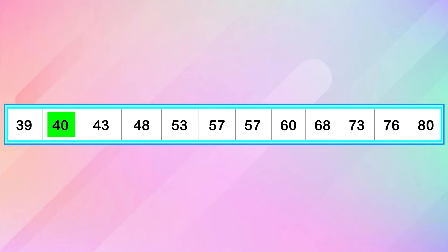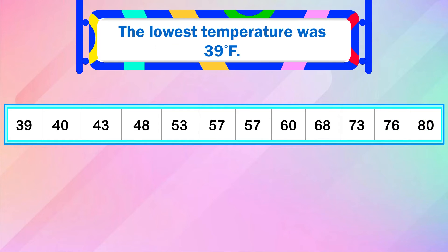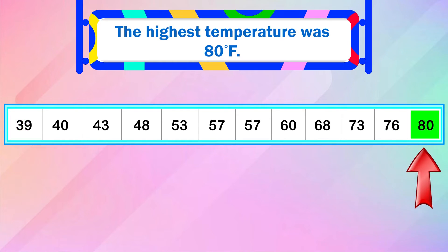We have 39, 40, 43, 48, 53, 57, 57, 60, 68, 73, 76, and 80. The lowest temperature was 39 degrees Fahrenheit, and the highest temperature was 80 degrees Fahrenheit.